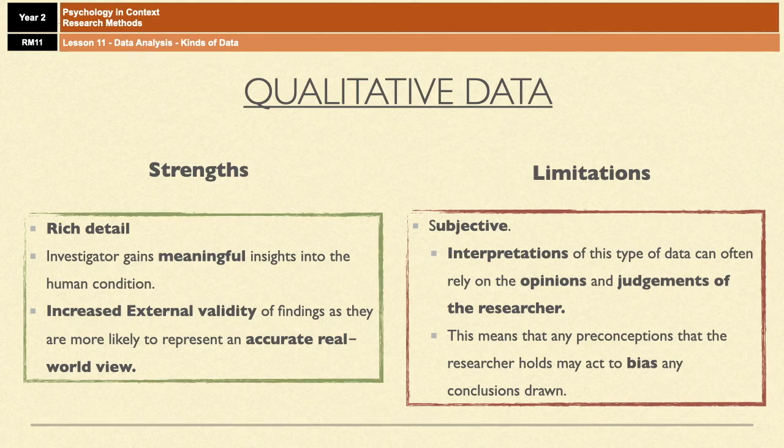could act as a bias to any conclusions that are being drawn. So the conclusions that are being drawn are very related to how the researcher interprets what he has found or what she has found, and those interpretations could get influenced by the researcher's own morals and values. So that's a problem for qualitative data.